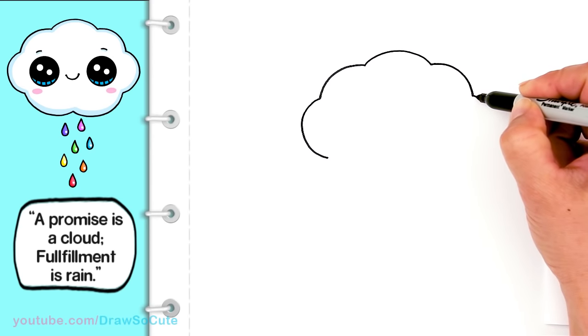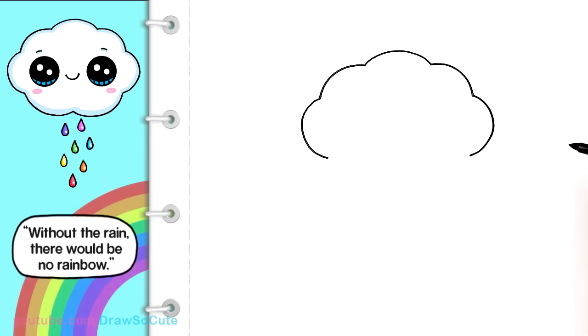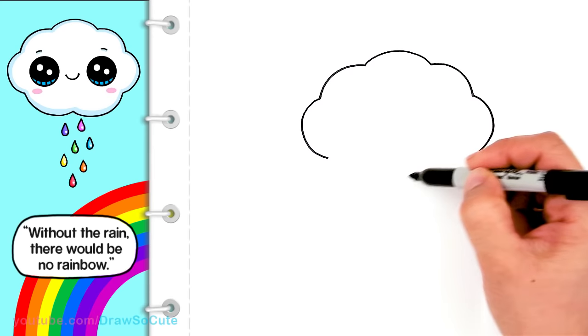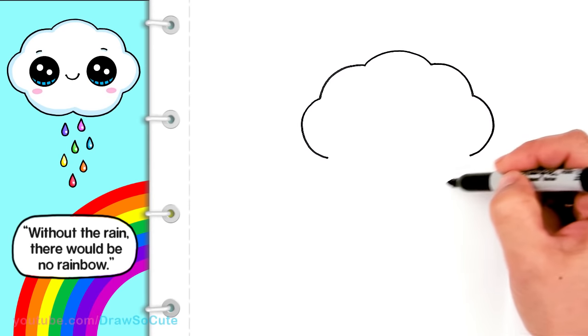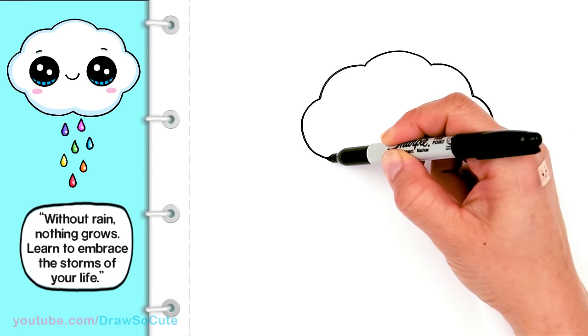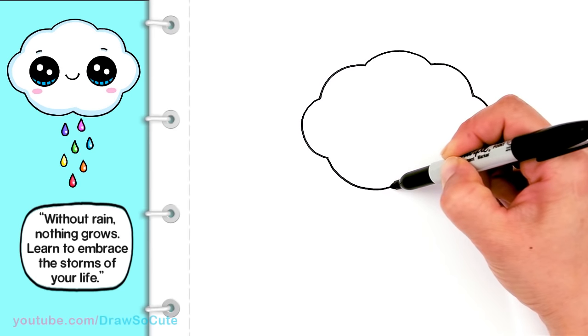So same thing on this side. And one more. And two more. The bottom ones, we're going to draw them, two of them right here. So I'm going to come about right here. And I'm just going to eyeball it because it is a cloud. Doesn't have to be perfect at all.